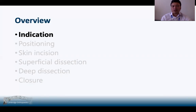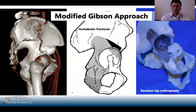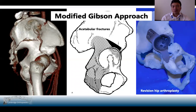What are the indications for the modified Gibson approach? It provides excellent access to the posterior acetabulum, particularly for acetabular fractures that extend slightly more anteriorly than the Kocher-Langenbeck approach would allow. It is also useful for acetabular fractures that extend above the sciatic notch, as the modified Gibson approach allows you to safely dissect out the superior gluteal neurovascular bundle. It's also really useful for complex revision hip arthroplasties where you need to access the bone above the sciatic notch to secure a cage, similar to the structure visible in the image on the right.